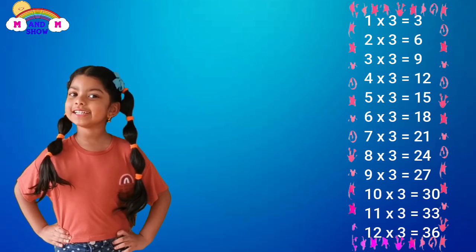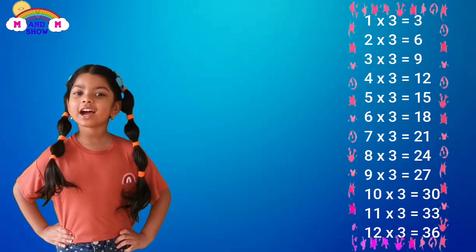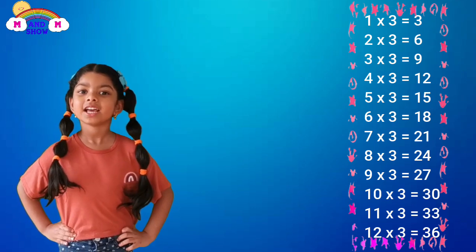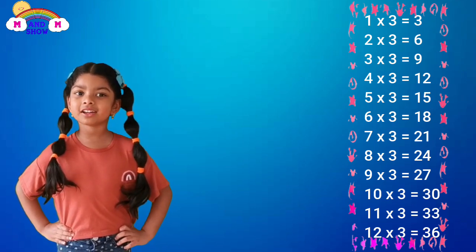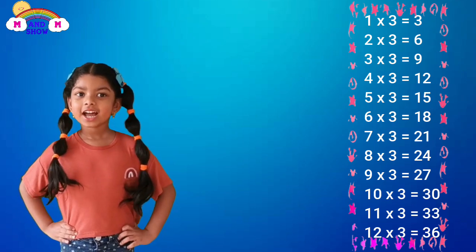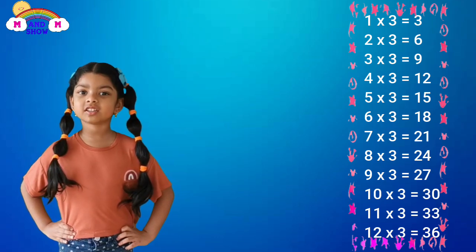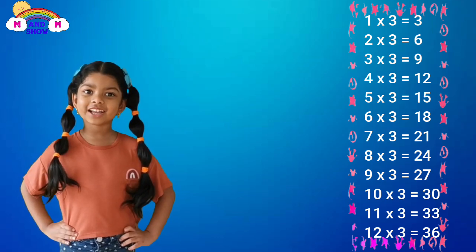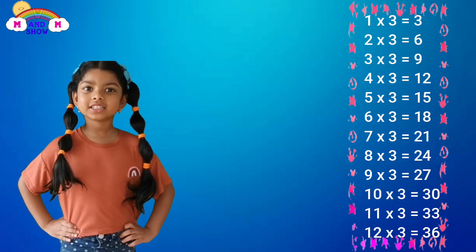Eight time three is twenty-four, nine time three is twenty-seven, ten time three is thirty, eleven time three is thirty, twelve time three is thirty-six.